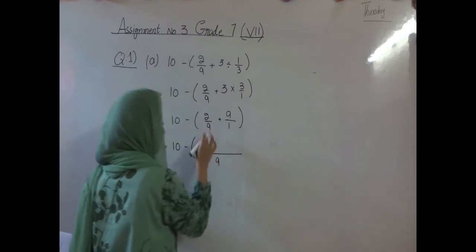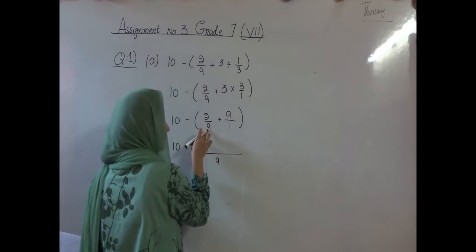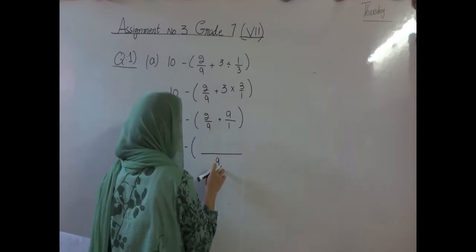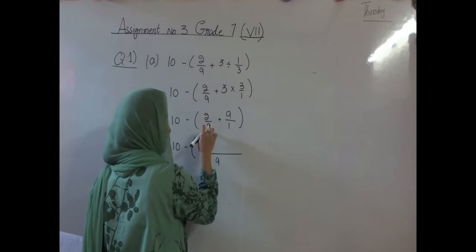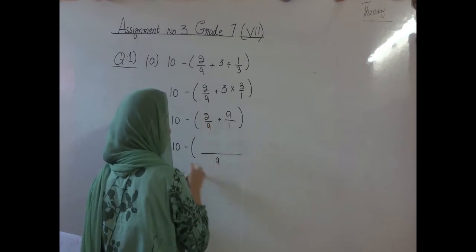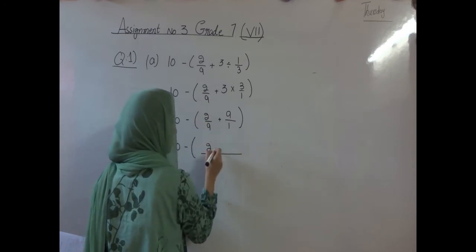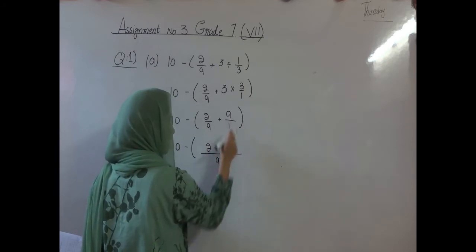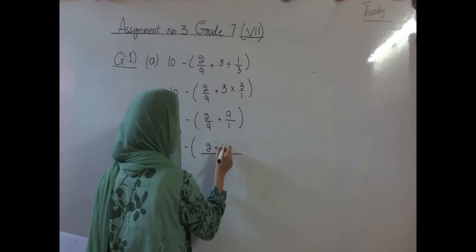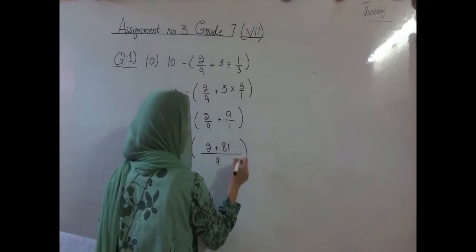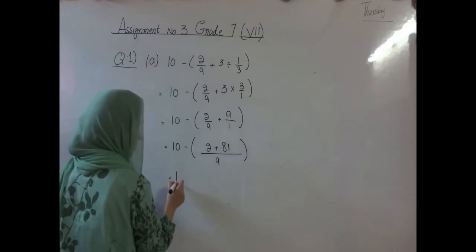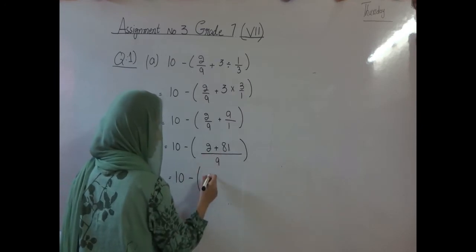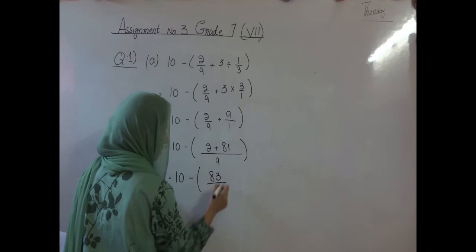The procedure is: the denominator will divide into the LCM, and then the answer will multiply with the numerator. 9 divided by 9 is 1, and 1 multiplied by 2 is 2. Plus 1 divided by 9 is 9, and 9 multiplied by 9 is 81. Then minus: 2 plus 81 equals 83, divided by 9.